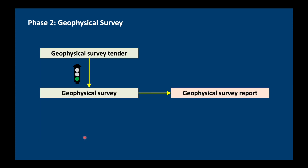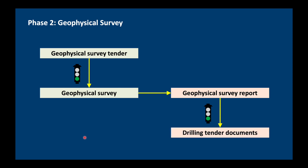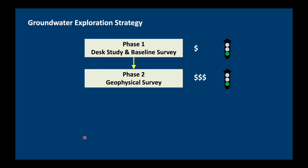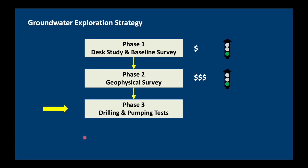The geophysical survey should result in a geophysical survey report, usually written by the geophysicist. If it looks successful, we move ahead and use the geophysical survey information to write the specifications for the drilling tender documents — meaning how many wells should be drilled and how deep. The well depth is not speculation; it is based on the results of the geophysical survey. So our geophysical survey has been successful. We're now moving on to phase three — drilling and pumping tests. This is the most expensive part of groundwater exploration. Often people only look at this budget and want to move ahead as fast as possible, ignoring the study phases: the baseline survey, desk study, and geophysical survey. But we have to be very careful to do a good job before we start drilling to reduce the chances of not drilling successful wells.